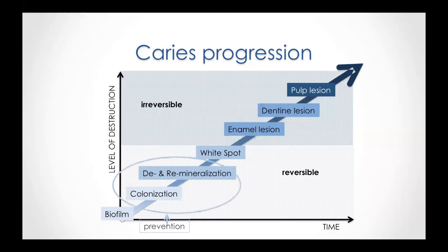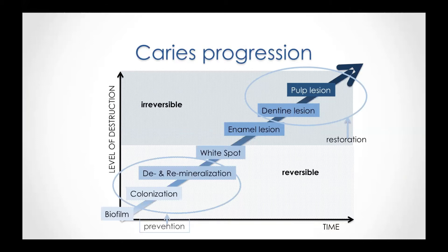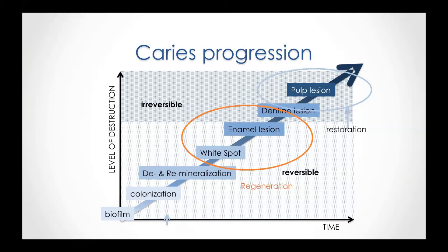Today we have the option to work in the field of prevention by taking care of the biofilm, stopping demineralization and fostering remineralization. Or, if it has progressed into a cavity, we can do a filling, or maybe a fissure sealing or interproximal sealing — while we don't have anything for in between. The reversible phase is the phase we should try to extend and make things happen in before everything progresses into a cavity.